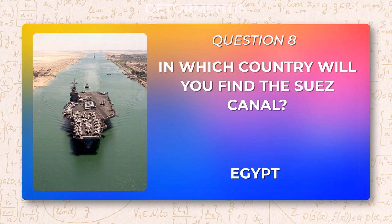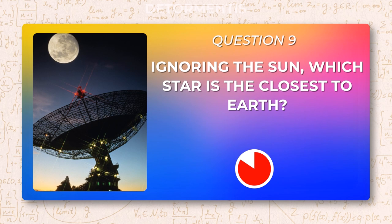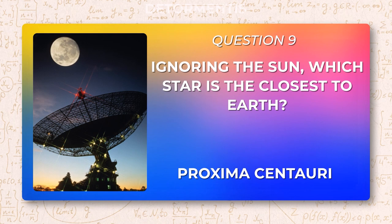Ignoring the sun, which star is the closest to Earth? Proxima Centauri.